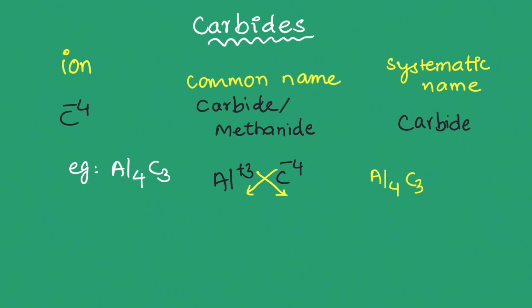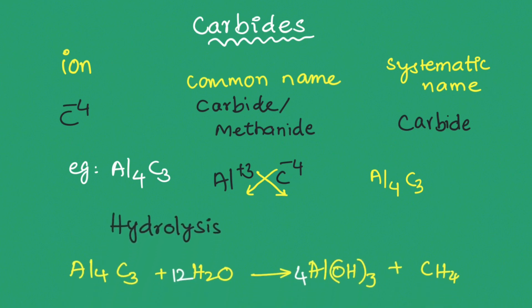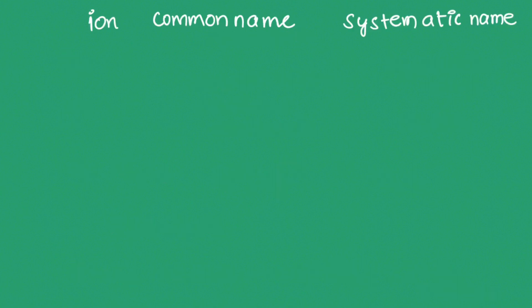On hydrolysis of aluminium carbide, the products are aluminium hydroxide and methane. According to the balanced equation, approximately three moles of methane are produced. This type is therefore called methanide.